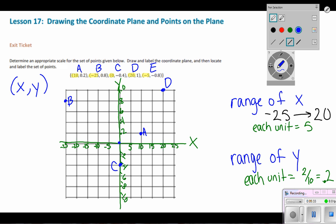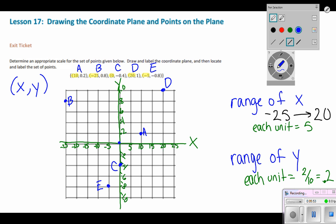Last one, we'll call this point E, is negative 5 and negative 8 tenths. So starting at the point of origin, I'm going to move to the left, negative 5, and down negative 8 tenths, 2, 4, 6, 8 tenths. So this is right here, and I'm at letter E.